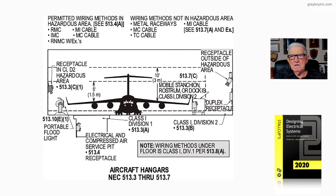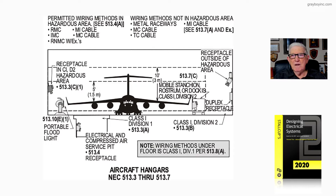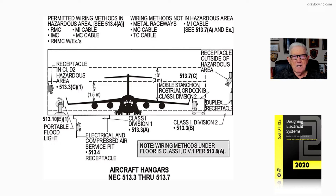For wiring methods that are not in the hazardous area, you can use metal raceways, MC cable, TC cable, MI cable, and any of the exceptions to 513.7a that you would review. So your key sections here are 513.4a, 513.7a, and the exception.